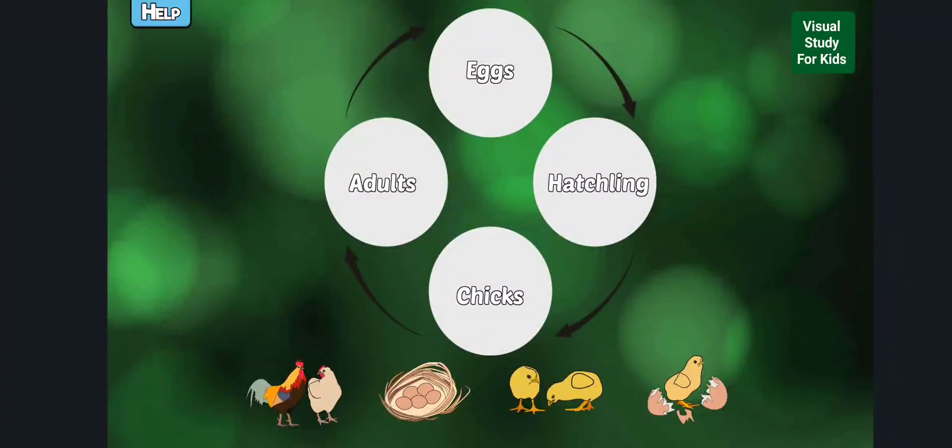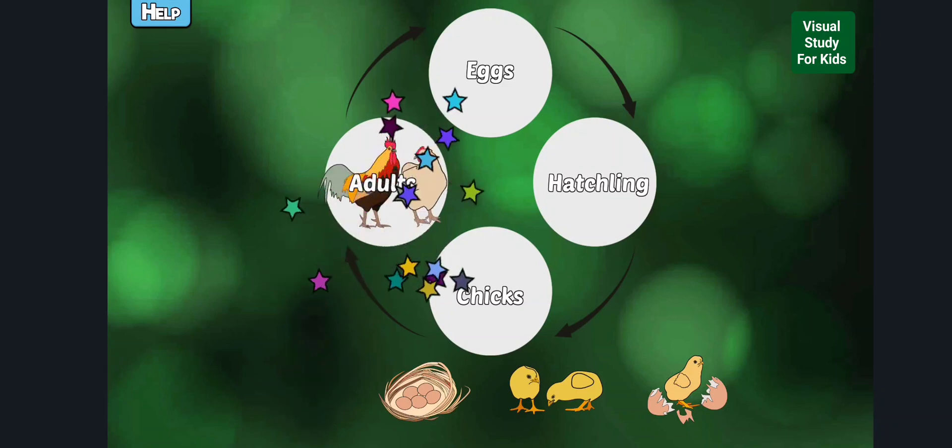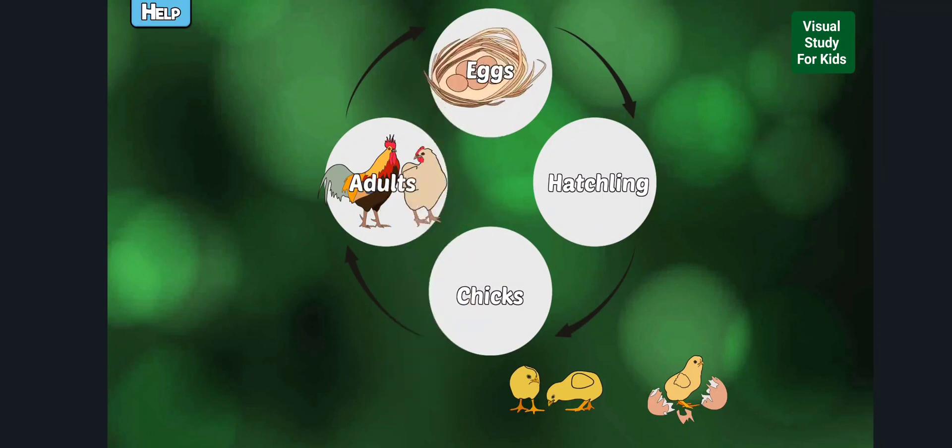Complete the chicken life cycle. Adult males are called roosters and females are called hens. Hens will lay eggs to continue the life cycle. Chicken eggs will incubate for about 21 days.